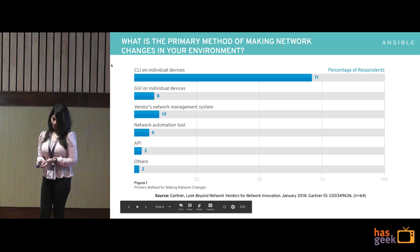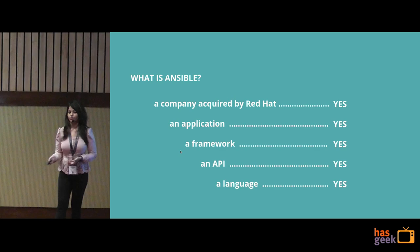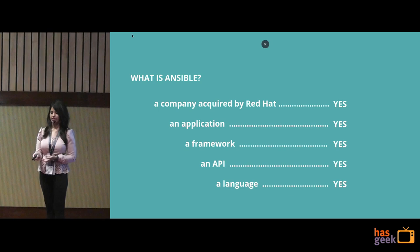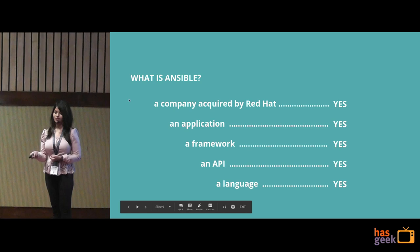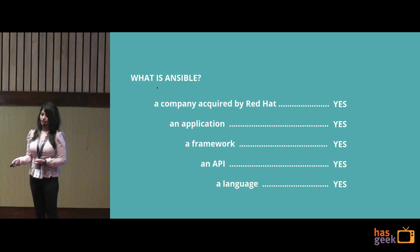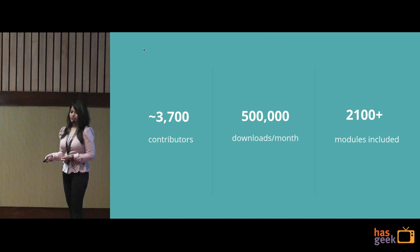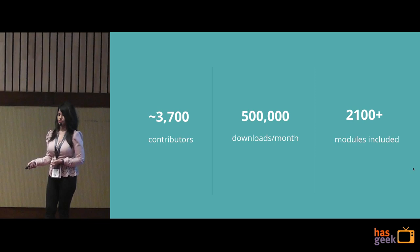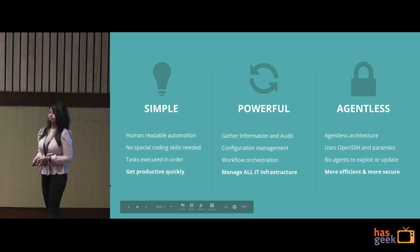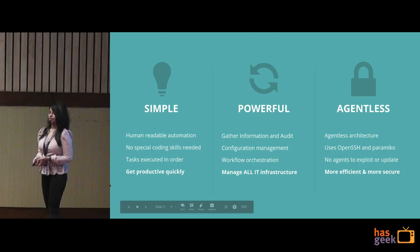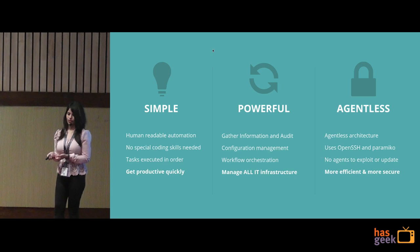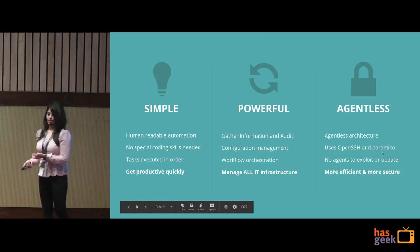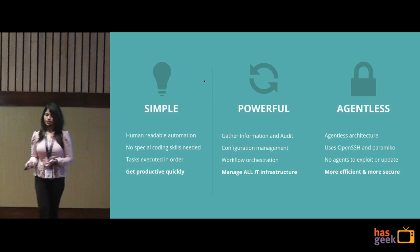Now that you know why we require network automation, the automation tool I'm going to talk about is Ansible. I'm pretty sure everyone here knows about Ansible, but a brief introduction: it was started in 2012 and acquired by Red Hat in 2015. Currently we have 3,700 contributors, five million downloads per month, and 2,100-plus modules. Ansible is very simple — it uses YAML, which is a very English-like language, and playbooks to maintain your entire infrastructure or workflow. Regardless of being simple, it's very powerful. You can deploy applications, orchestrate workflows, configure devices, and automate your daily jobs.